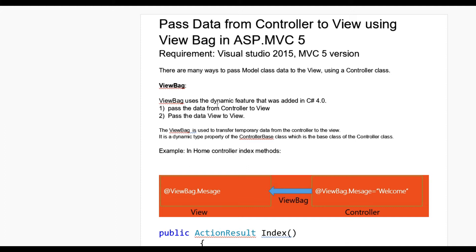ViewBag uses the dynamic features that were added in C# 4.0. Passing data from controller to view, and passing data view to view, we can achieve using ViewBag. Basically ViewBag is used to transfer temporary data from controller to view.